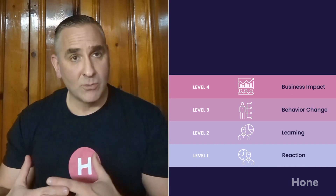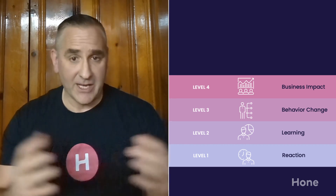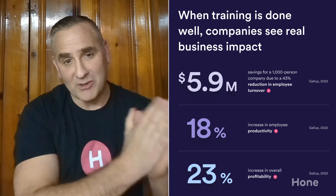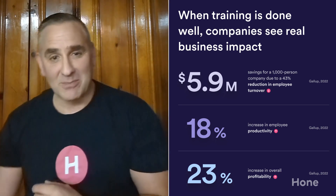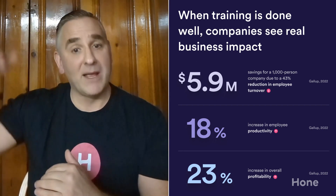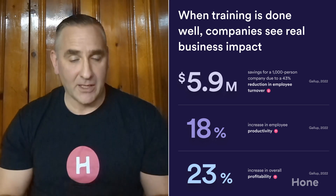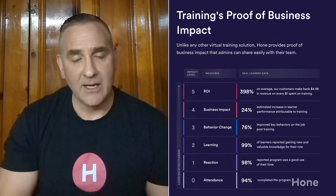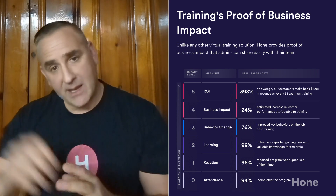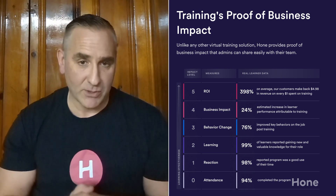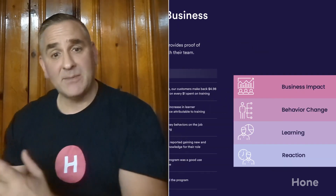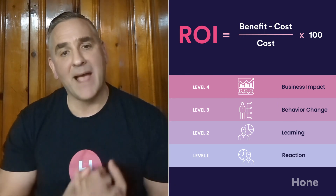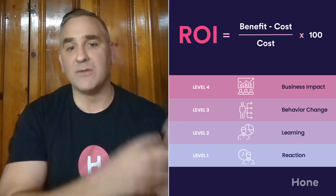For level four, we typically use one of three techniques. If we can get a lot of data from business and HR metrics, we'll use a control group — almost like a drug study — looking at the trained group versus the untrained group, almost like a drug versus a placebo, to see if we can take some incremental credit. Next is the attribution technique, where we get data from the business and literally ask participants how much they would attribute to the training. Then there's the estimate technique — if we can hardly get our hands on any hard data from the business, participants come back and estimate how much performance improved for themselves or their teams.